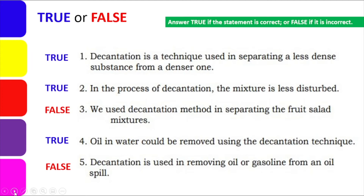Number 4: Oil in water could be removed using the decantation technique — that is True, because we can do that in school using two different containers, one containing a mixture of immiscible liquids which are oil and water. Number 5 is False because decantation is used in removing oil or gasoline from an oil spill — remember what was said earlier: an oil spill is an event or tragedy that happens in our water bodies, and since decantation is all about pouring out one part of the mixture, you cannot do that in an actual area like the sea or a river.